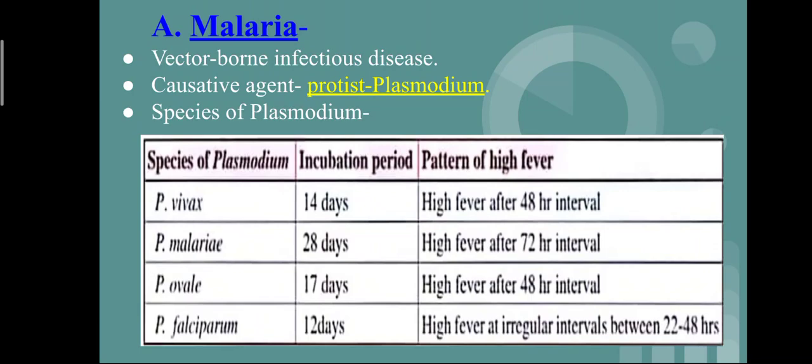The causative agent of Malaria is Plasmodium. There are different species of Plasmodium: Plasmodium vivax, Plasmodium malariae, Plasmodium ovale, and Plasmodium falciparum.